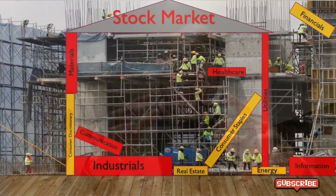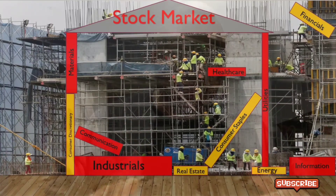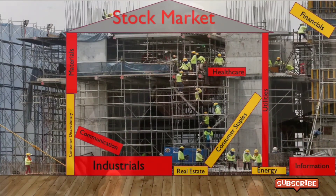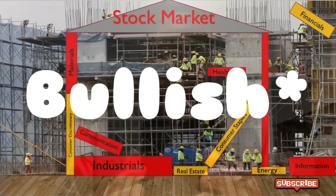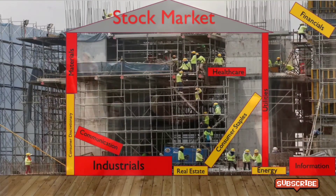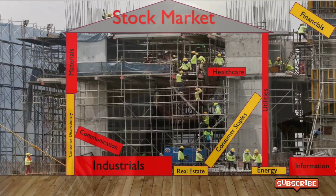When you are rebuilding the stock market — or let's say you're kind of bearish on it — those 11 sectors will go back up to form your house. But some sectors will be smaller and some sectors will be bigger.